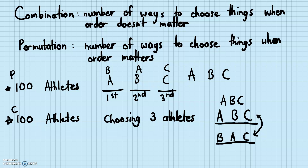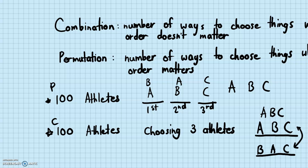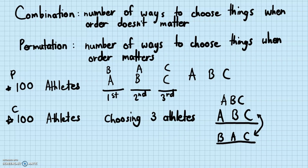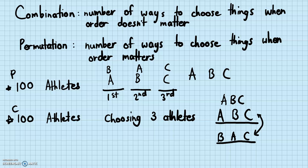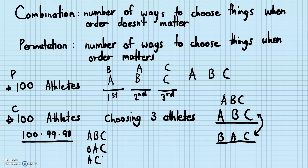Let's look at this example: choosing three athletes from a group of 100 athletes. Remember for permutations, the number of ways to choose first place, second place, and third place was 100 times 99 times 98. But this doesn't work for combinations because it counted A-B-C and B-A-C and A-C-B as different choices. It counted all of these as different choices, but when you think in terms of combinations, they're the same choice — they're all concerning athletes A, B, and C.